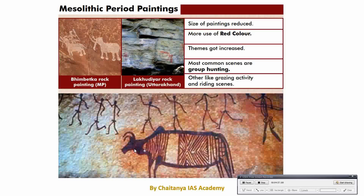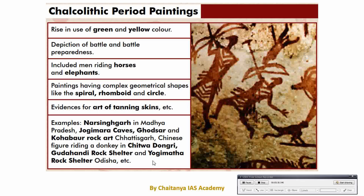After the prehistorical painting, the next phase is Mesolithic period painting, which falls around between 9,000 to 10,000 BC. In this style, themes increased from the earlier period. The themes include group hunting, grazing, and riding of the horse and other animals. The size of this painting has been reduced as compared to earlier prehistorical painting. The major sites where Mesolithic period painting has been found are Bhimkhet Caves and Lucidiyara rock painting.